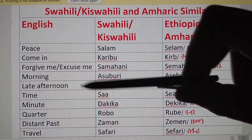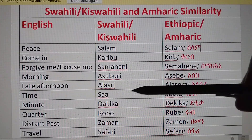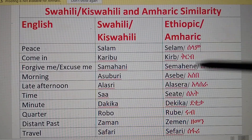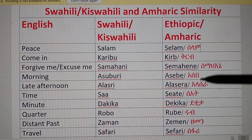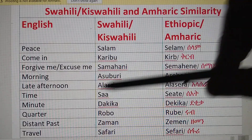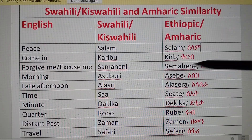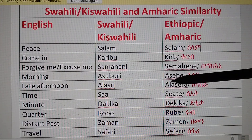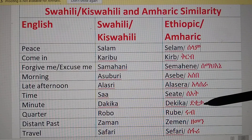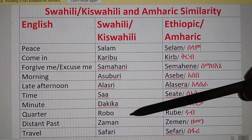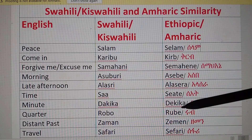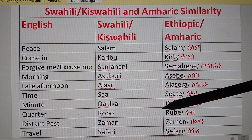The next word is 'time.' In Swahili it is 'Sa'a,' and in Amharic it is 'Sa'at' — essentially the same. 'Minute' in Swahili is 'Dakika,' and in Amharic it is also 'Dakika.' 'Quarter' in Swahili is 'Robo,' and in Amharic 'Rule.' They are both from a common root word.